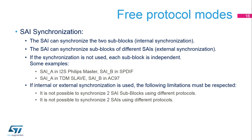The internal synchronization can be used for communication requesting two data lanes, such as full-duplex I2S. The external synchronization can be used for communication requesting more than two data lanes, up to four, for example, when interfacing HDMI ICs. All the sub-blocks synchronized together must use the same protocol characteristics.